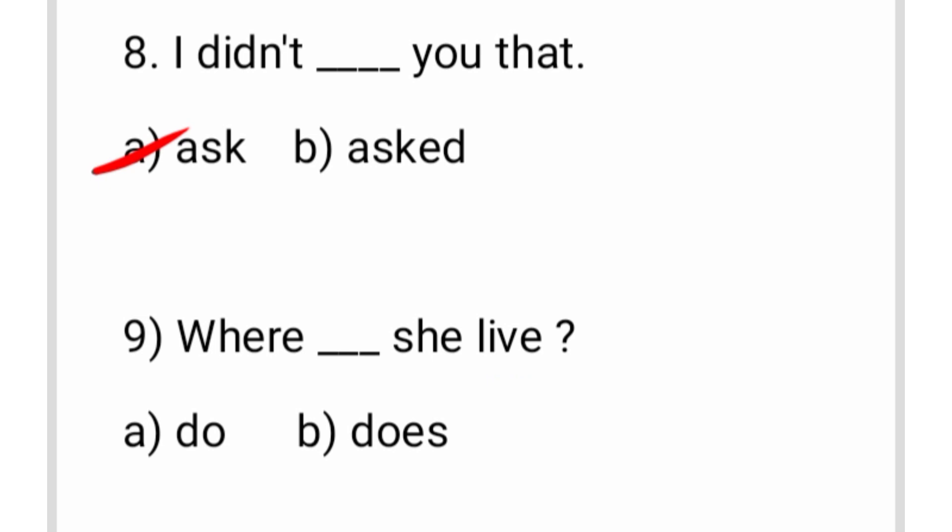The ninth question is: where dash she leave? As we saw earlier, 'has' is used with 'he', 'she', 'it'. Similarly, 'does' is used with 'he', 'she', 'it', while 'do' is used with 'you', 'we', 'they'. Here the subject is 'she', so we use 'does'. The answer is: 'Where does she live?'